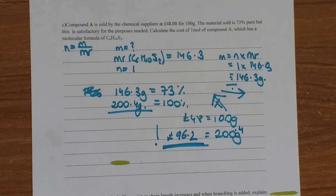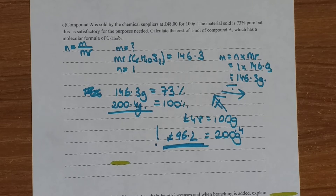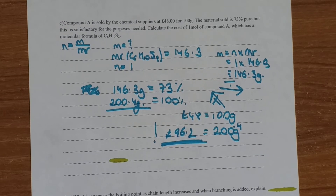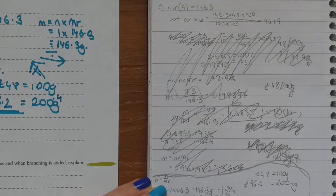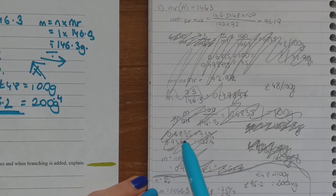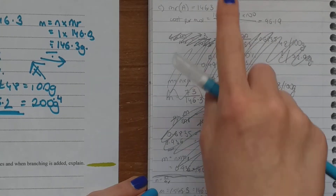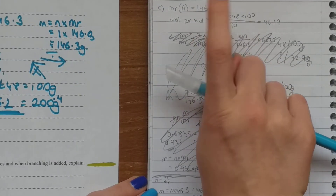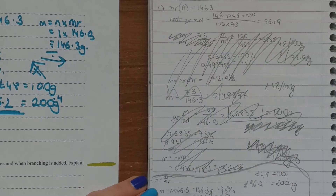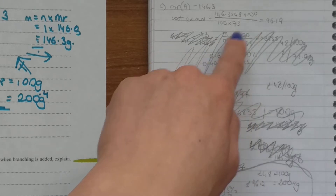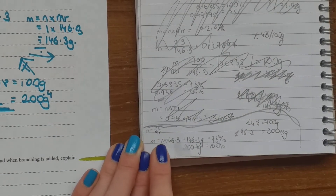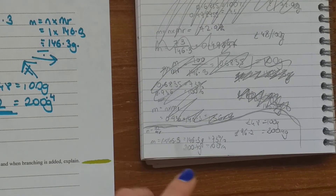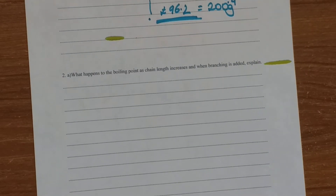I know it looks really difficult when you first look at the question, but when you simplify it and go back and do it on your own, you'll get it. I will show you how I did it — this is exactly what the mark scheme says. I know this is the MR and this is the price, but now I understand how they got it. Let's get back to our questions.